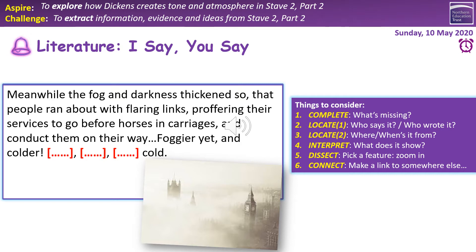A feature to zoom in on: that triplet of verbs — piercing, searching, biting — they all suggest the idea of being quite negative, quite aggressive, quite self-consciously damaging to people. A link elsewhere: I quite like the link to Fred, who comes beautifully with the cold — seen as a positive force in Stave 1, shining and ruddy-faced and glowing. Equally, you could contrast it with the fog and darkness when Scrooge wakes at the start of Stave 2.